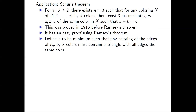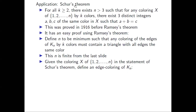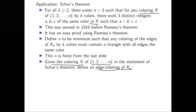We define n to be the minimum integer such that any coloring of the edges of K_n by k colors must contain a triangle with all edges the same color. By Ramsey's theorem, this n is finite. Now given any coloring χ of {1, 2, …, n} by k colors, we convert it to an edge coloring of K_n. We let the vertices of K_n be {1, 2, …, n}, and for an edge (x, y), we assign the color χ(|x - y|).